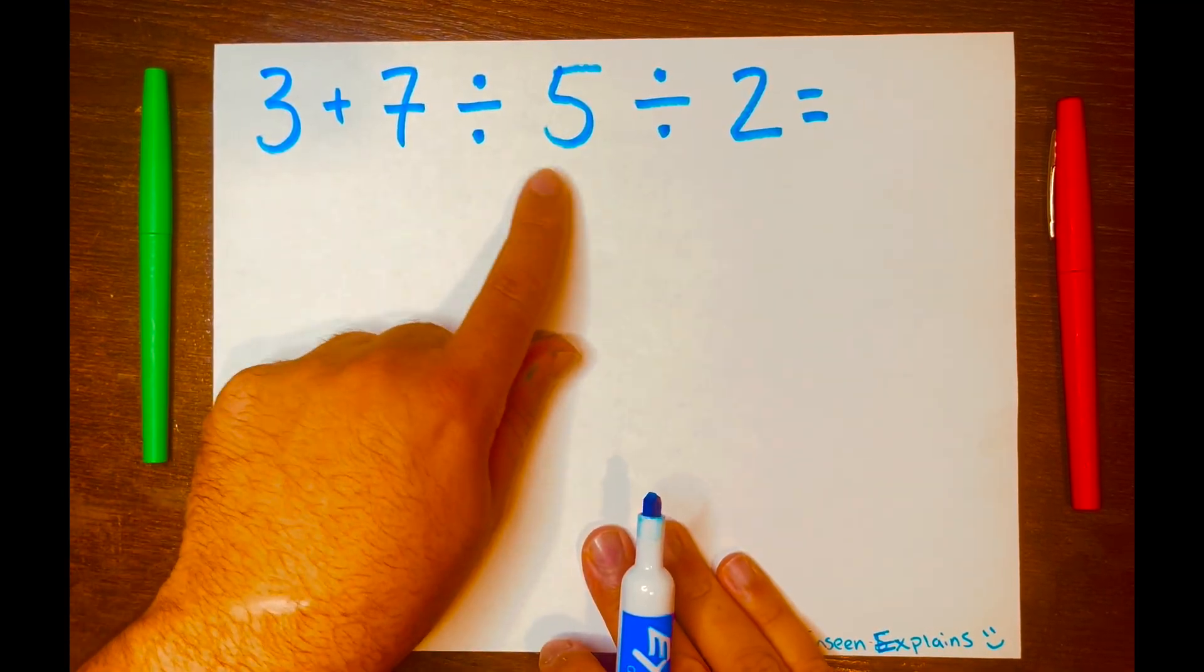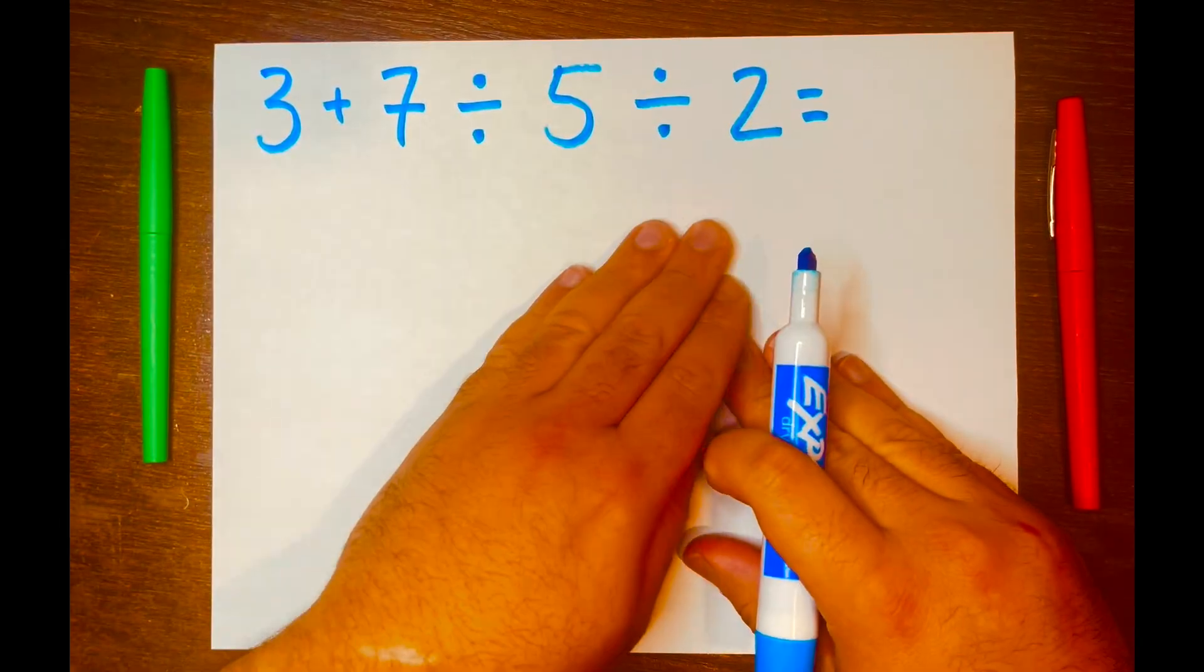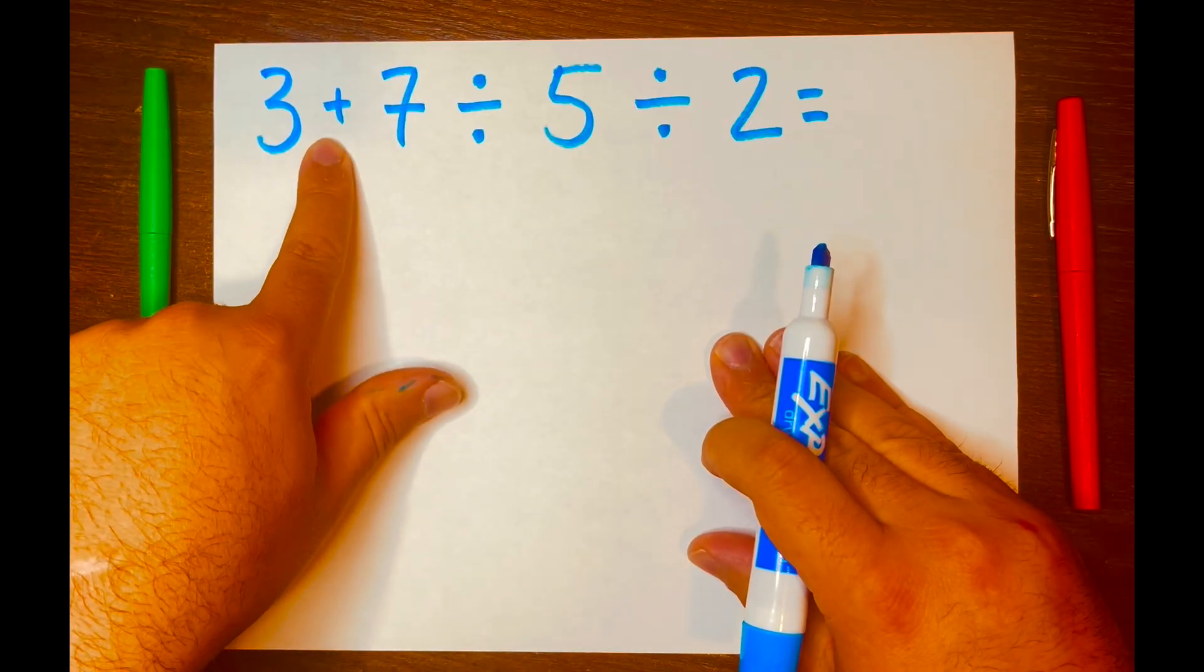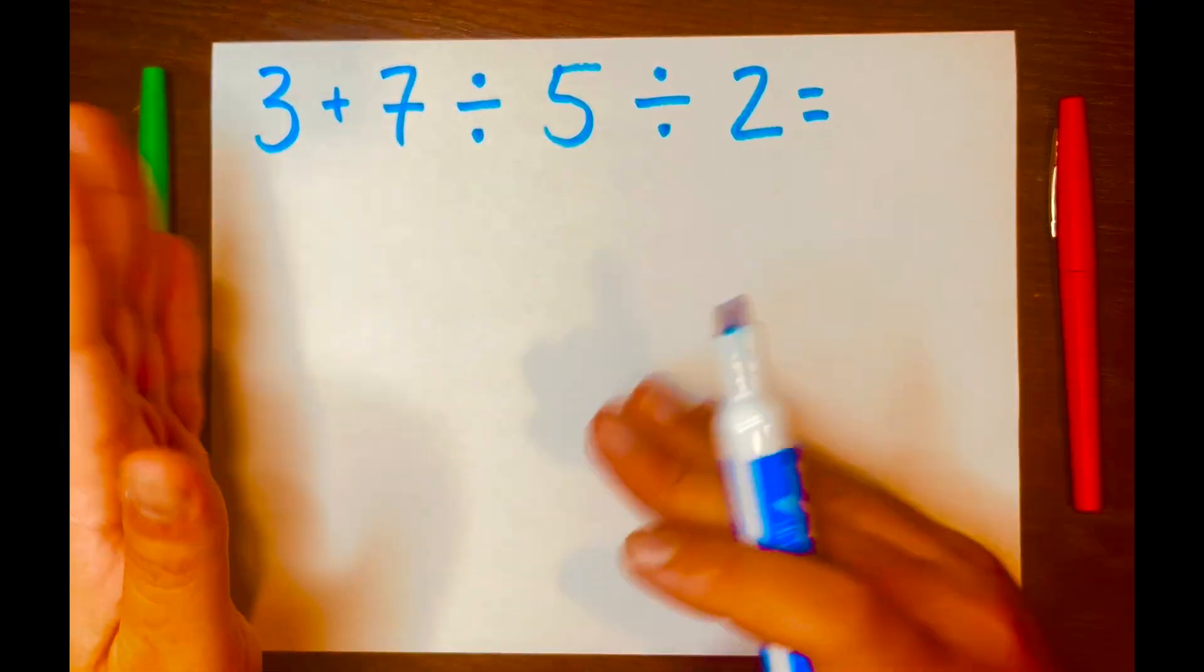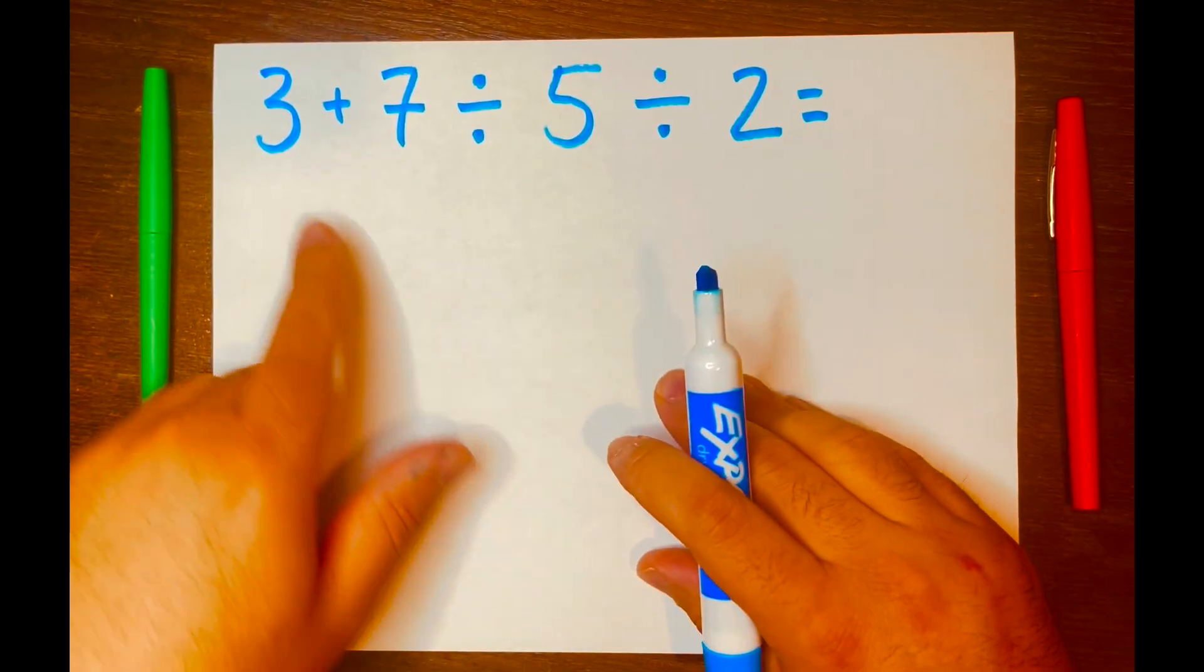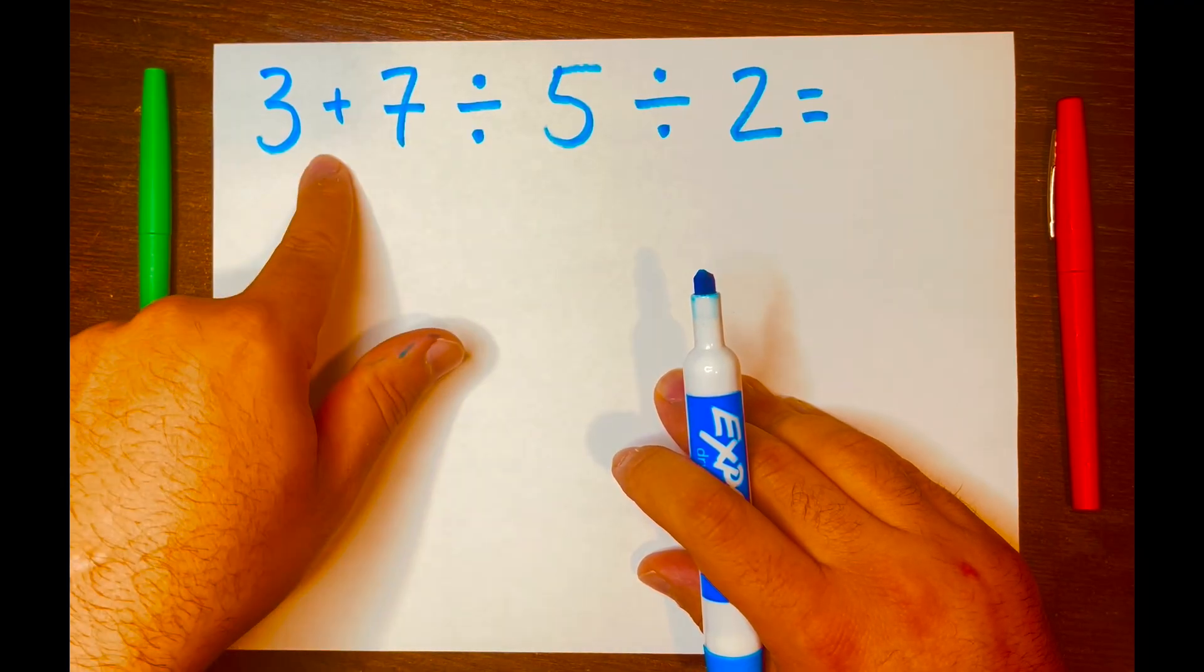3 plus 7 divided by 5 divided by 2. The first thing I do is analyze the problem knowing that I'm adding and dividing. So I'm thinking of PEMDAS working from left to right according to its levels. 3 plus 7 will not go first because division is a higher level than addition.